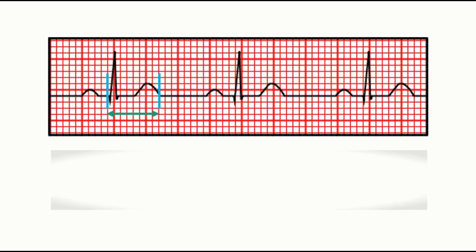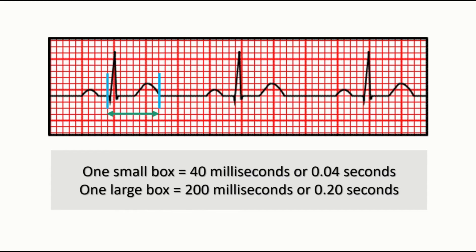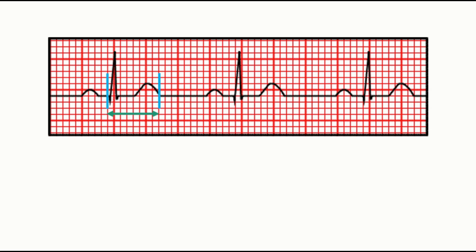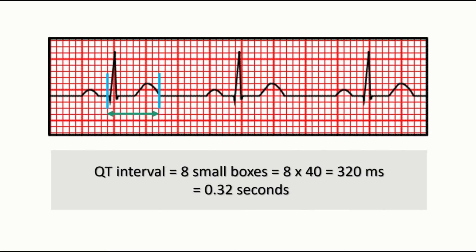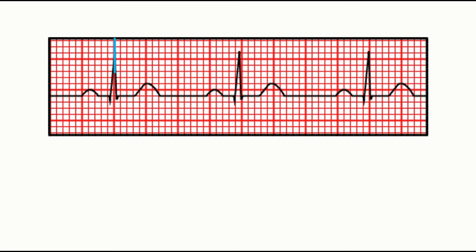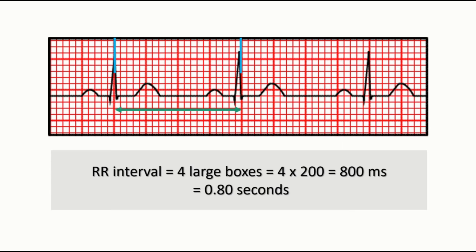As we learned in the previous video, one small box is equivalent to 40 milliseconds and one large box is equivalent to 200 milliseconds. In our case there are approximately eight small boxes, so QT interval will be 40 into 8, that is 320 milliseconds or 0.32 seconds. Now we mark the peaks of two consecutive R waves which will give us the RR interval. There are approximately four large boxes between two R waves, so RR interval will be 200 into 4, that is 800 milliseconds or 0.80 seconds.